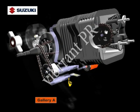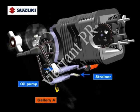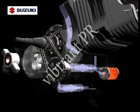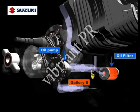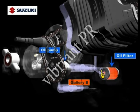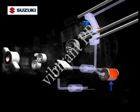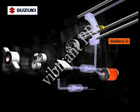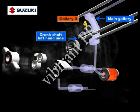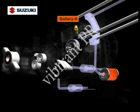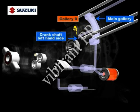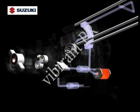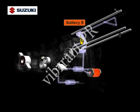Gallery A runs from the oil strainer to the oil pump. Gallery B runs from the oil pump to the oil filter. Gallery C runs from the oil filter to the main gallery in the left-hand crankcase. Gallery D connects the main gallery of the left-hand crankcase to the left-hand side of the crankshaft. Gallery E connects the left-hand crankcase main gallery to the cylinder head.